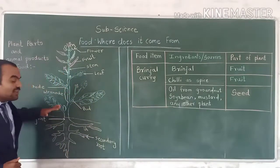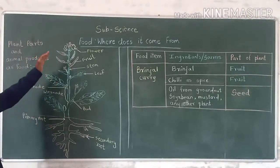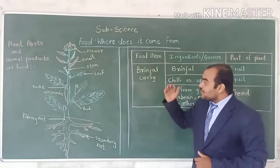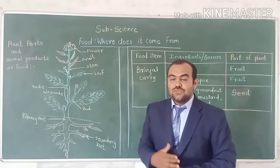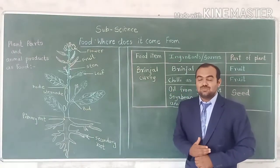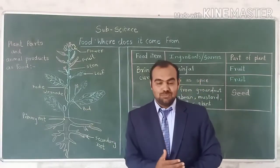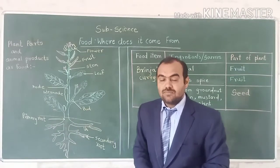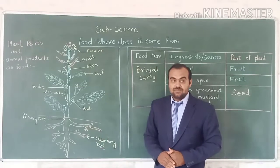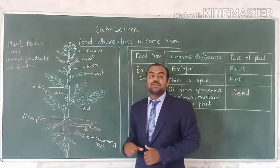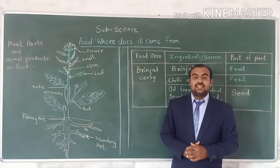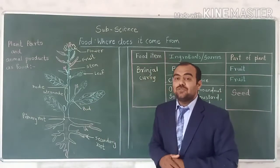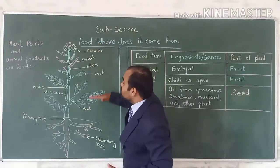Here I am drawing a figure which shows the total plant parts. We discussed that we get food from the plant — so which parts do we use? We are also using the root as food, and we are using the shoot system as food. The root system means the part of the plant below the ground, in the soil — this is called the root system. The main part of the root is called the primary root, and its sub-roots are called secondary roots. The part which we see above the ground is called the shoot system.